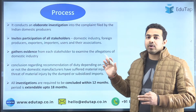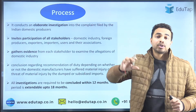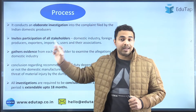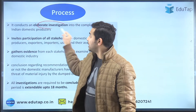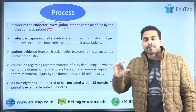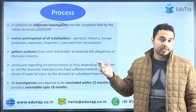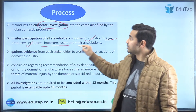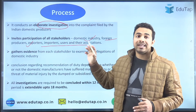Regarding the process: an Indian domestic manufacturer that is injured due to unfair trade practices by foreign entities files an application to the DGTR. The DGTR then has the responsibility of conducting an elaborate investigation into the complaints filed by these Indian domestic producers. After the application is filed, the DGTR invites submissions from all stakeholders — the domestic industry, foreign producers, exporters, importers, users, and their associations.